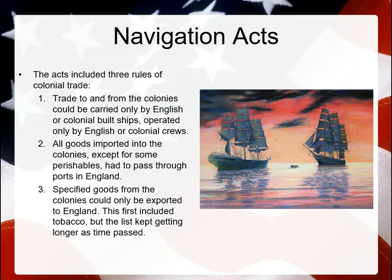One of the important acts passed was the Navigation Acts. Trading to and from colonies could be carried out only by English or colonial-built ships operated only by English or colonial crews. The Navigation Acts said you can only trade with official English or colonial-built ships and crews — mercantilist ideas forcing buying habits and making it unlawful to purchase from anyone else. Even if others were cheaper or more economically feasible for your family, you still had to buy from these merchants who knew you had no choice and likely raised their prices.